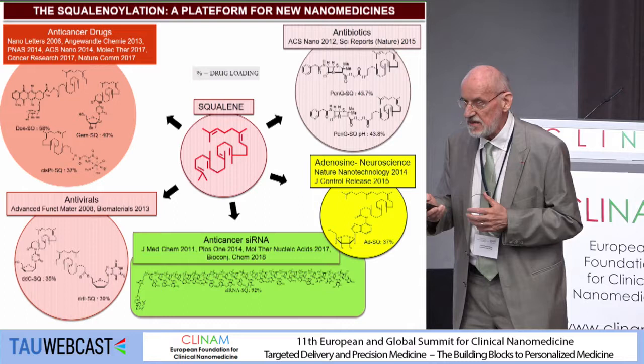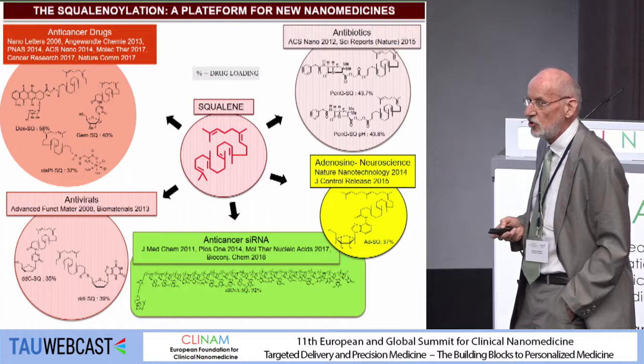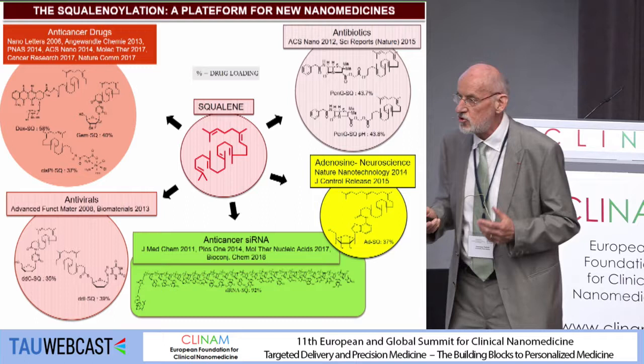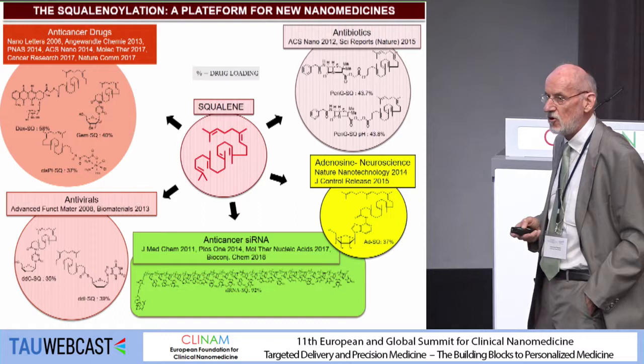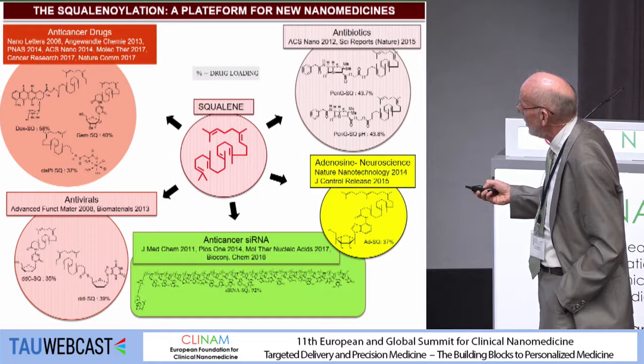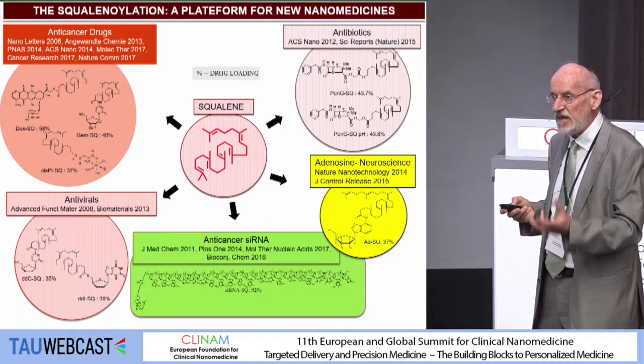This platform — the so-called squalenylation platform — has been applied to many molecules, including small anti-cancer drugs. For instance, with doxorubicin you can reach a drug loading of around 60%, and also with gemcitabine and cisplatin. You can also link squalene with antibiotics or antiviral compounds to treat intracellular resistant infectious diseases. Even linking the small lipidic squalene molecule with long, high molecular weight, hydrophilic small interfering RNA still yields nanoparticles after putting those bioconjugates into water.